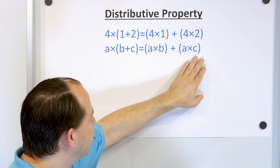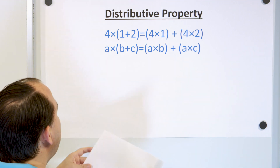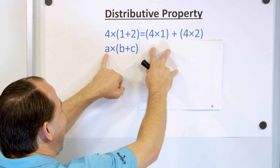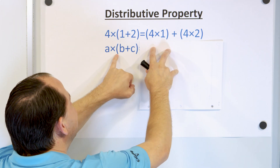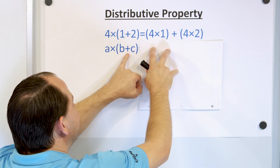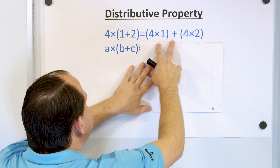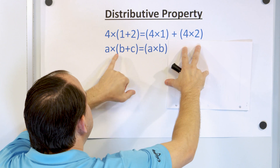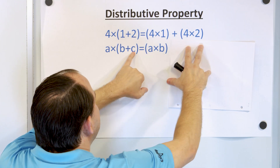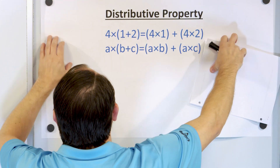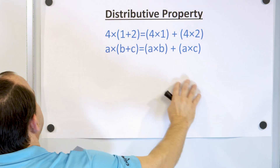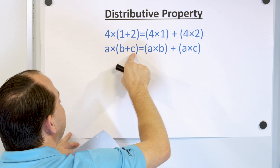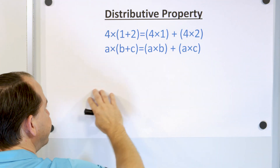Now in terms of letters, you need to get used to looking at letters, so don't let it scare you. All it's telling you is that if you have some number A times a parentheses with two other numbers B and C added on the inside, then it's the same thing as A times B plus A times C. So this A on the outside is being distributed in times the B, and then also being distributed in times the C.